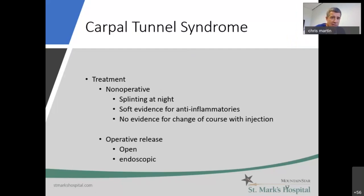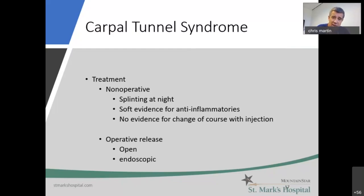As far as treatment, there are many things available. Not much has been shown to help as far as non-operative treatment. The wearing of a splint at night — so we stay out of that flexed wrist position — has been shown to help and potentially change the course of carpal tunnel syndrome. That is largely it. There's soft evidence at best for the use of anti-inflammatories. An injection — we usually use a steroid, which is an anti-inflammatory — but there's no evidence that the course of carpal tunnel syndrome will be changed with the use of an injection.